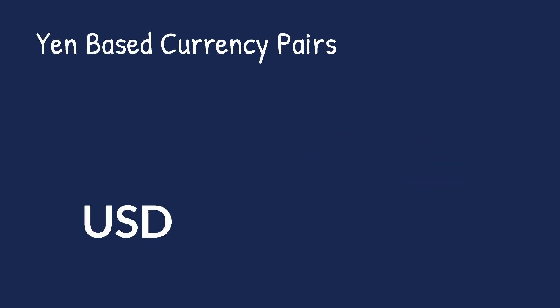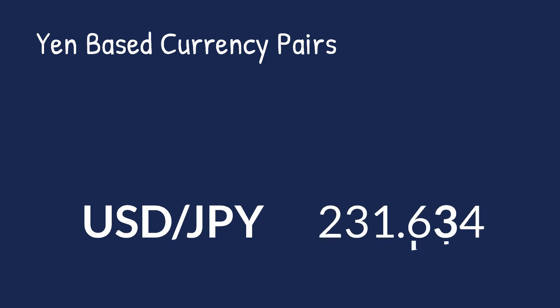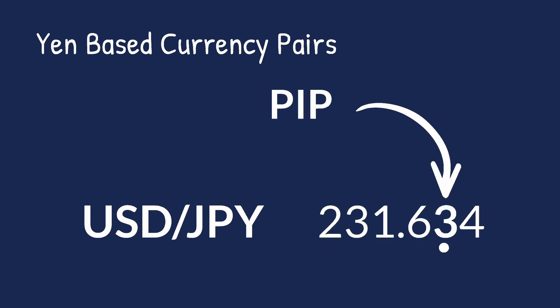Yen-based currency pairs, like US Dollar to Japanese Yen, are uncommon and are measured to three decimal places. The PIP value is shown in the second decimal digit.